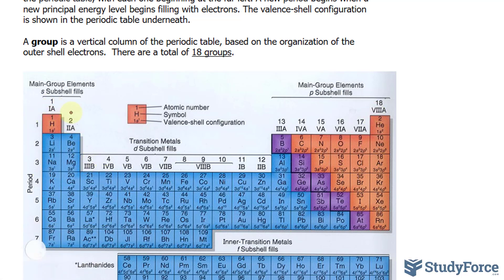But you also have 1a, 2a, 3a, 4a, all the way to 8a. That's just the American way of representing the groups.